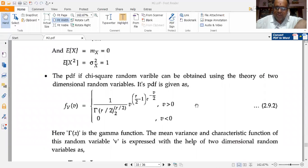The PDF of a Chi-square random variable is obtained using the theory of two-dimensional random variables whose PDF is reproduced in mathematical form here as f_v(v) equals 1 over gamma(r/2) times 2 to the power of r/2, this whole thing multiplied by v to the power of r/2 minus 1 times e to the power of minus v/2 for v greater than 0 and 0 for v less than 0.